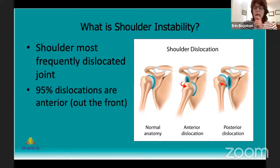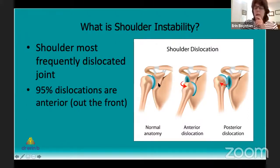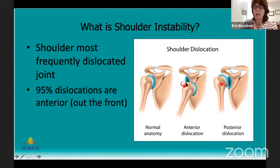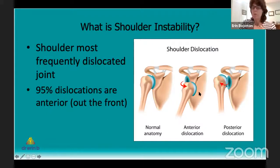When we look at instability or loss of normal alignment of the joint, the humeral head is normally lined up with the glenoid. But in one picture the head has popped out the front — the humeral head has dislocated out the front of the joint. In the final view, the humeral head has popped out the back. By far and away, the most common direction for the shoulder to dislocate is anterior, or out the front.